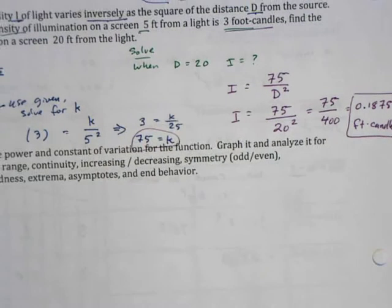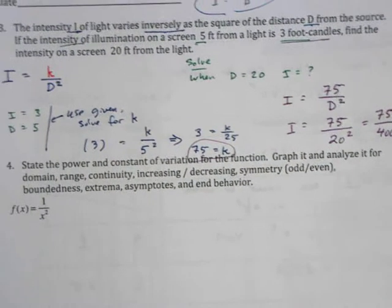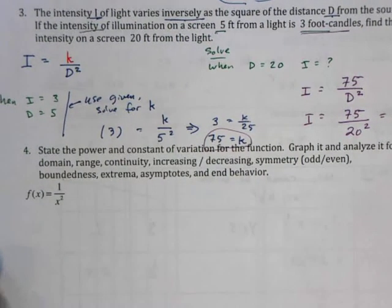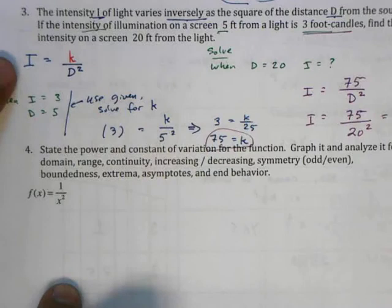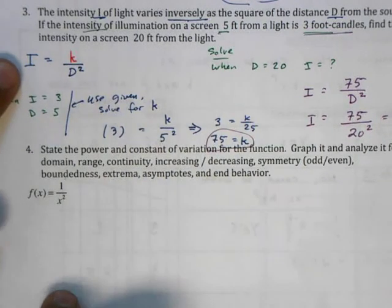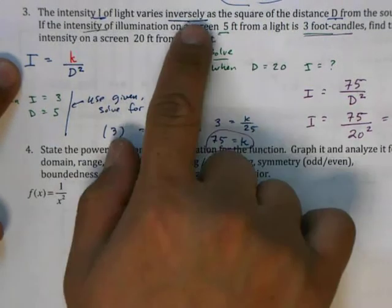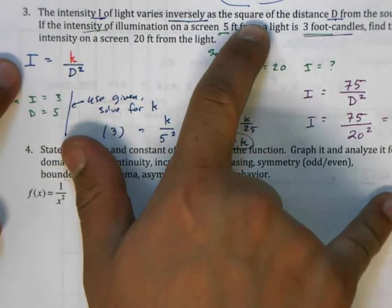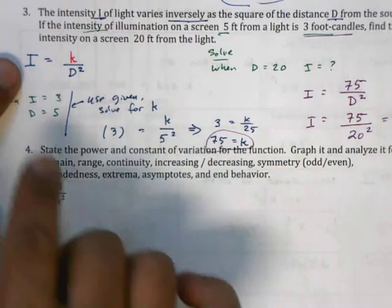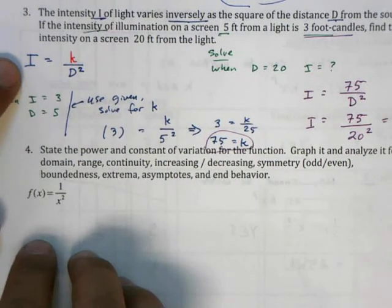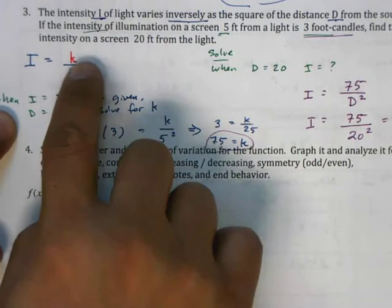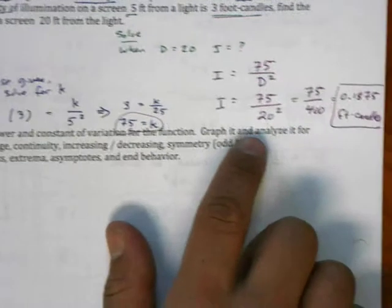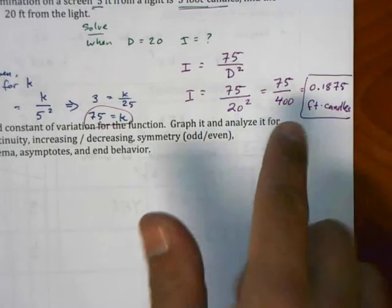I just want to recap this problem. The main idea is that we have to be able to understand what the equation is going to look like based on certain important information like inversely and square. You might not get square, you might get cubed or to the third or to the one half or something like that, but you need to be able to write an equation like this. We use some of the known information to find the constant of variation and then we use that constant to solve for the case when we have unknown information.